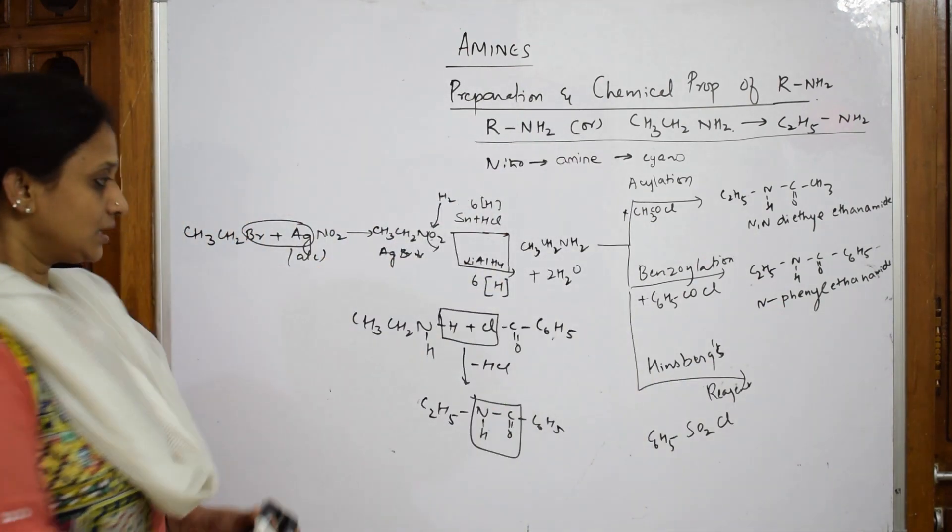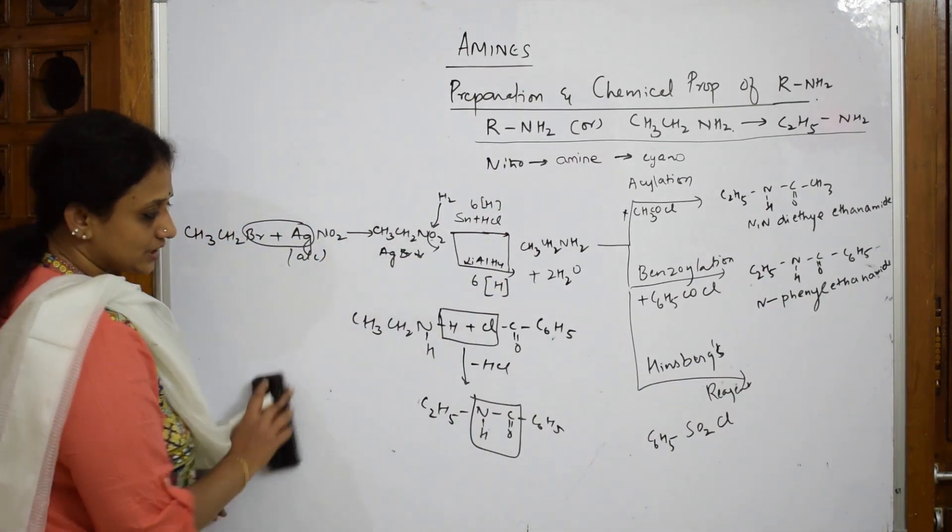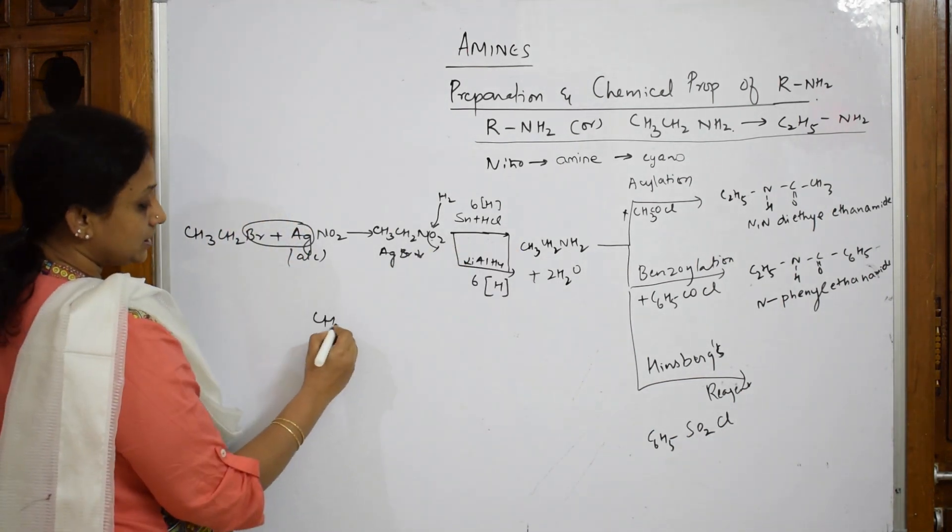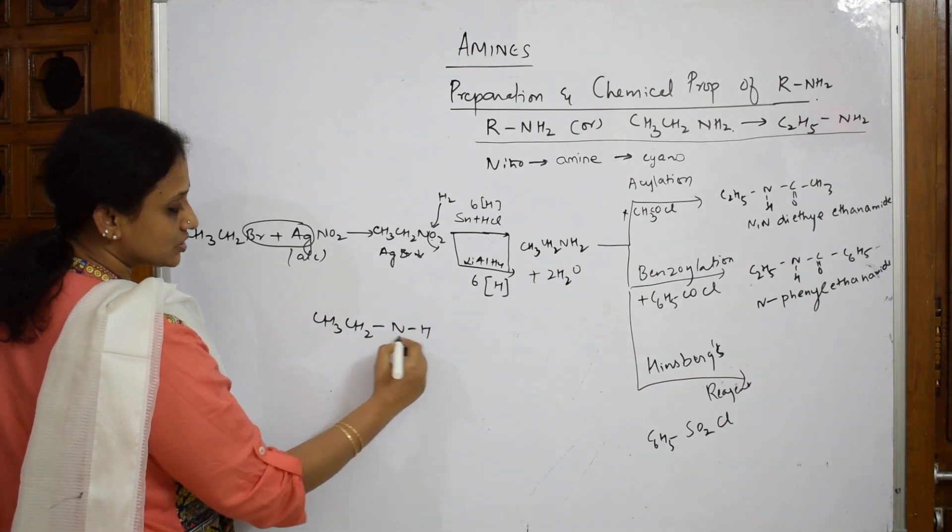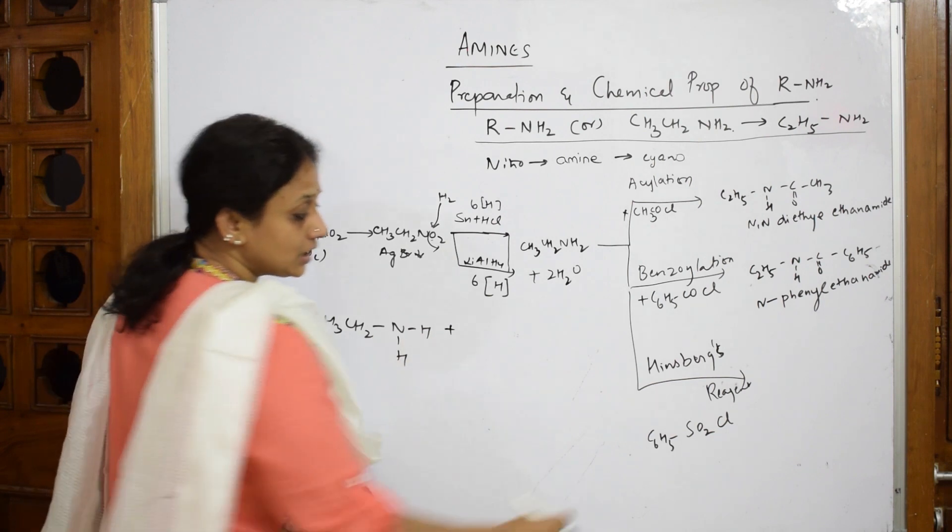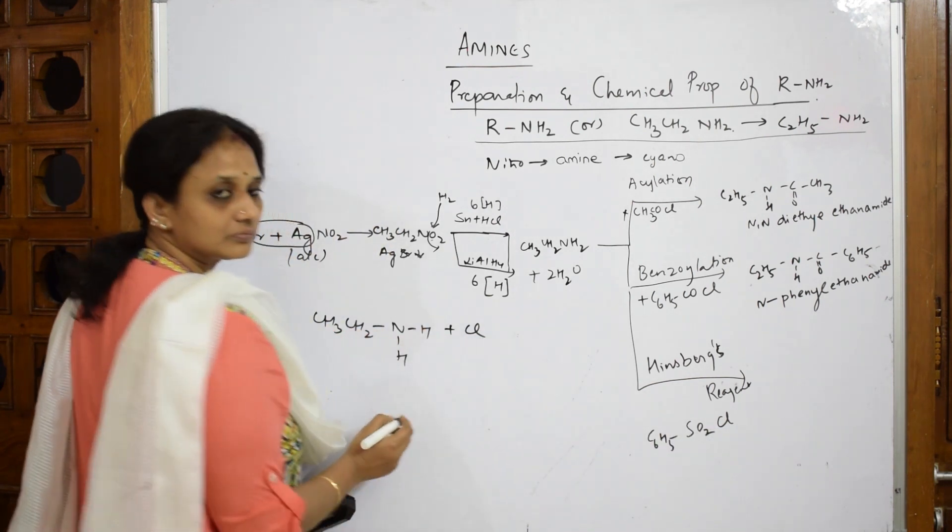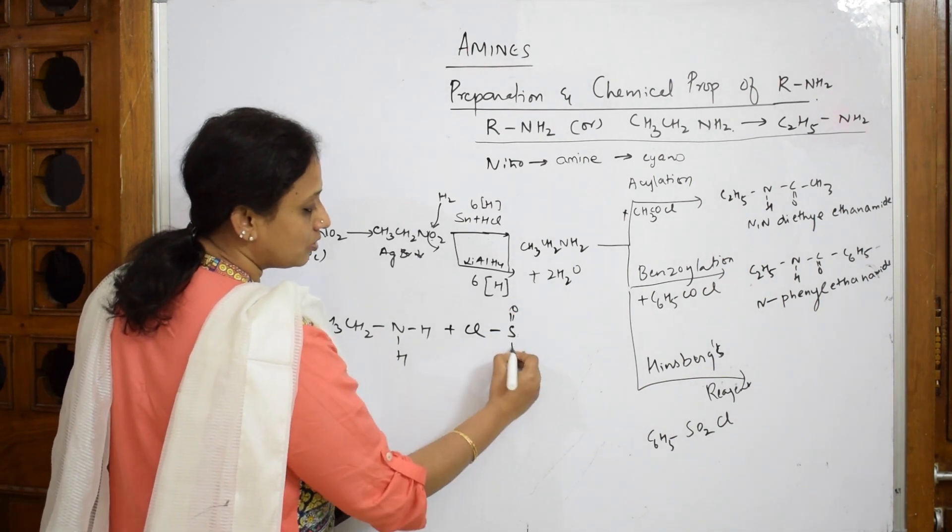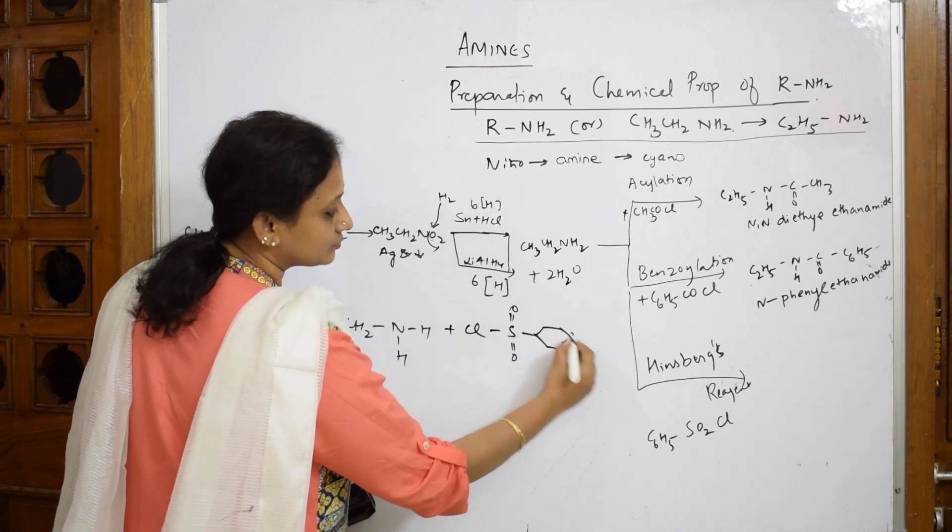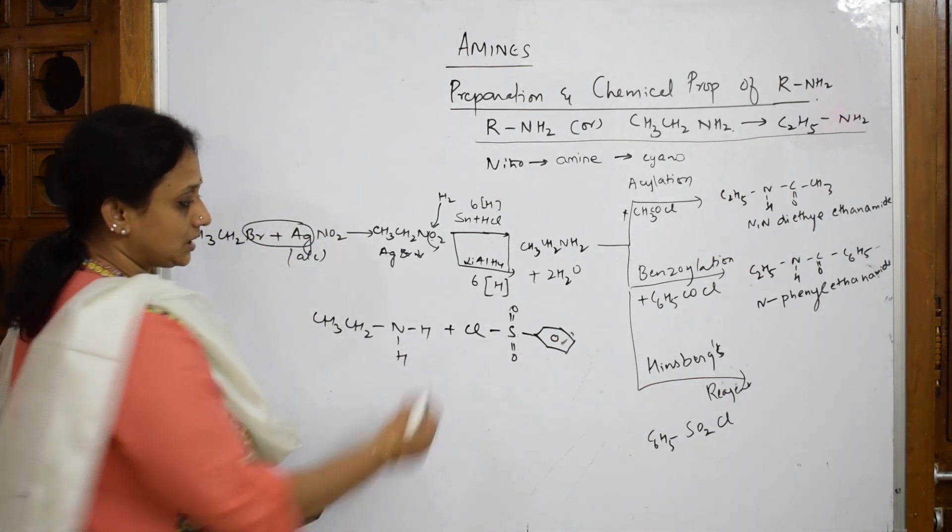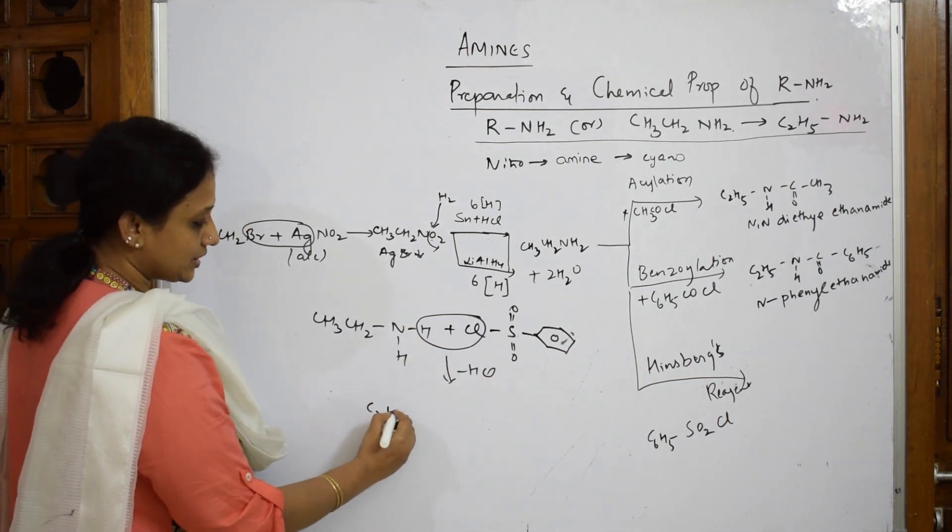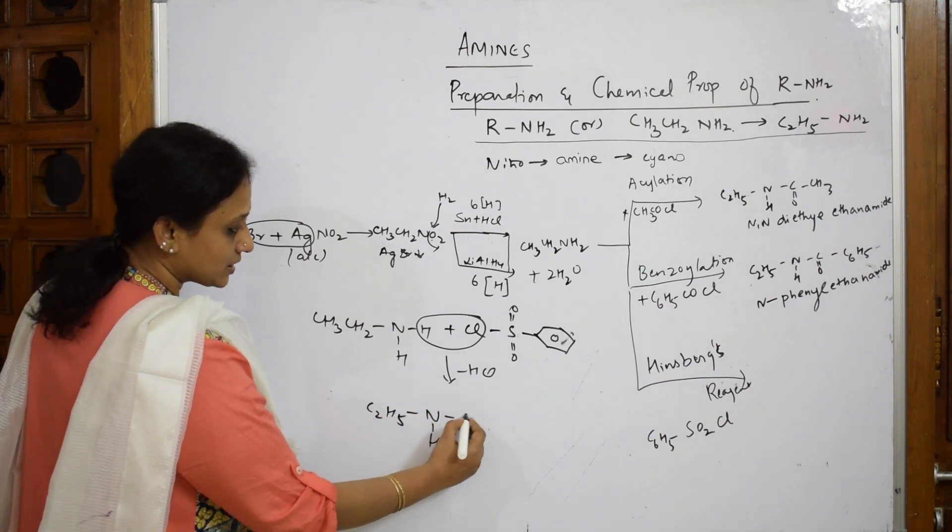In Hinsberg test, what should I take? I am going to pick up CH3CH2CH2NH2. Take the Hinsberg reagent - chlorine on this side, S double bond O, double bond O, and your benzene ring. Eliminate HCl and form the product. What product do you get? C2H5NHS.